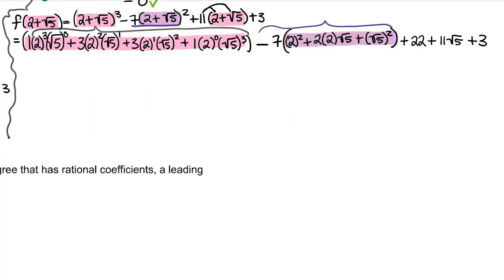Continue to simplify. We can expand this root 5 cubed to be root 5 times root 5 times root 5. Root 5 times root 5 is just 5, so this would be 5 root 5.